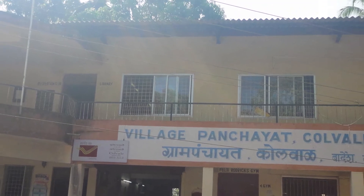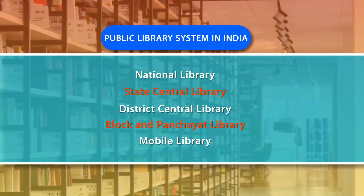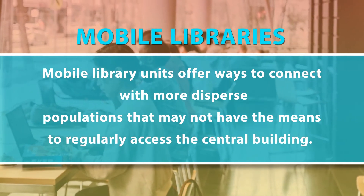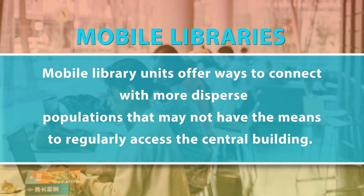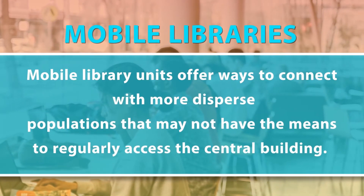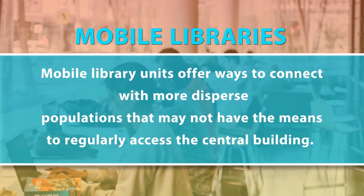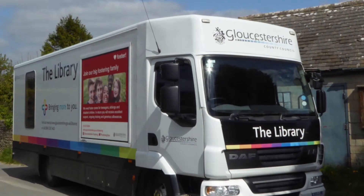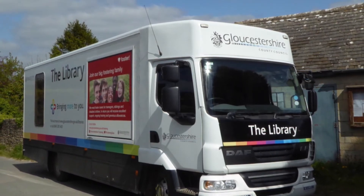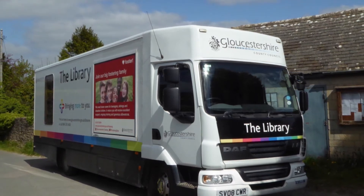Apart from these, mobile libraries are also there. These mobile library units offer ways to connect with more dispersed populations that may not have the means to regularly access the central library building. Bookmobiles have been a part of public library history for decades, traditionally using vehicles to deliver books to more distant communities. The main role of mobile libraries is to reach users who are not near the central, district, block, or panchayat library, offering them service at their own location.